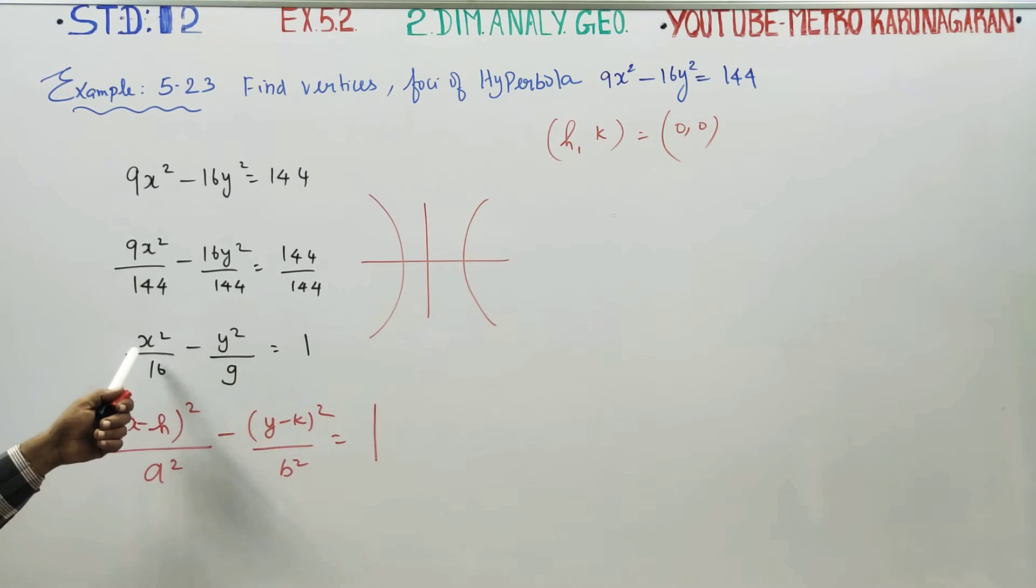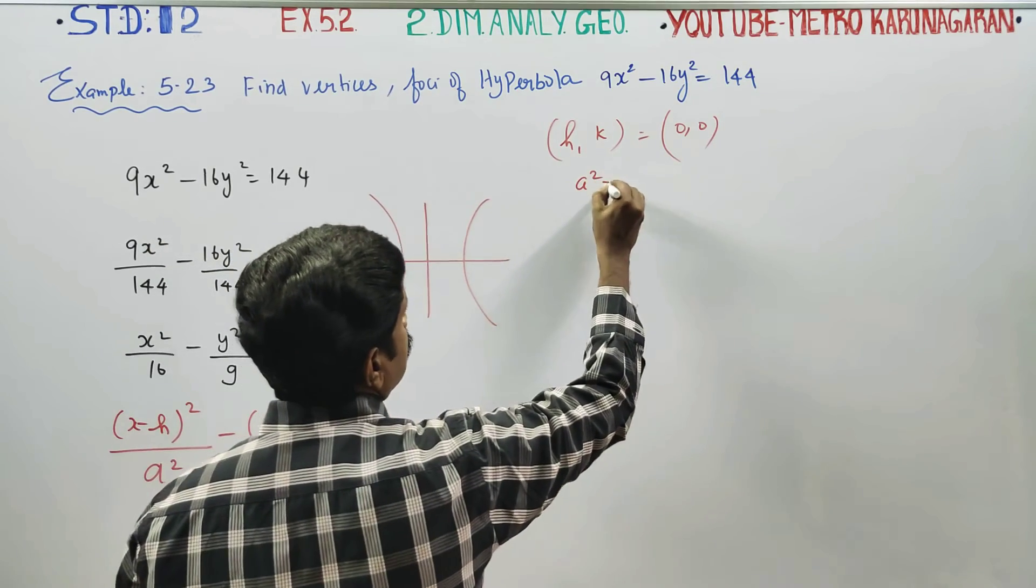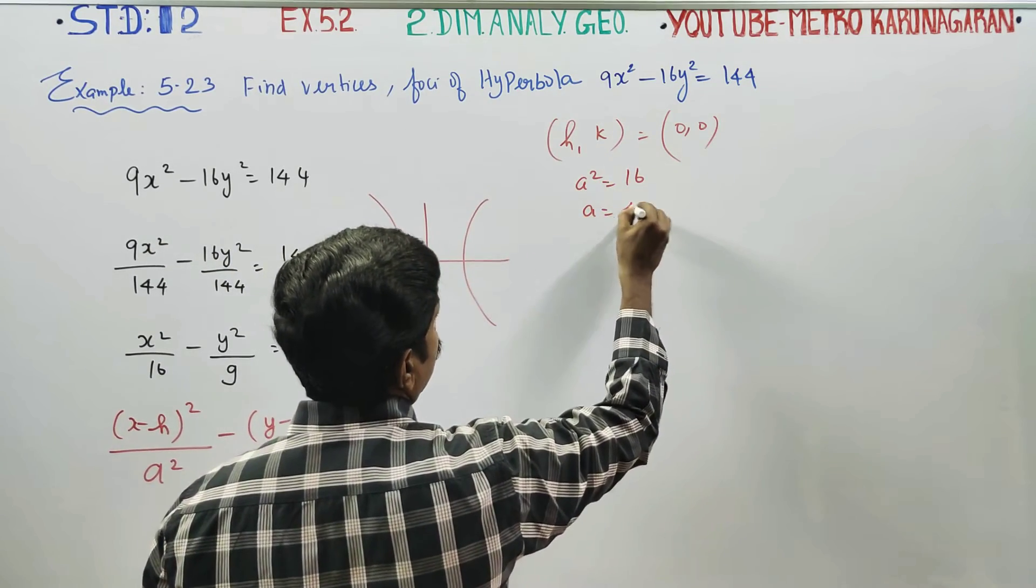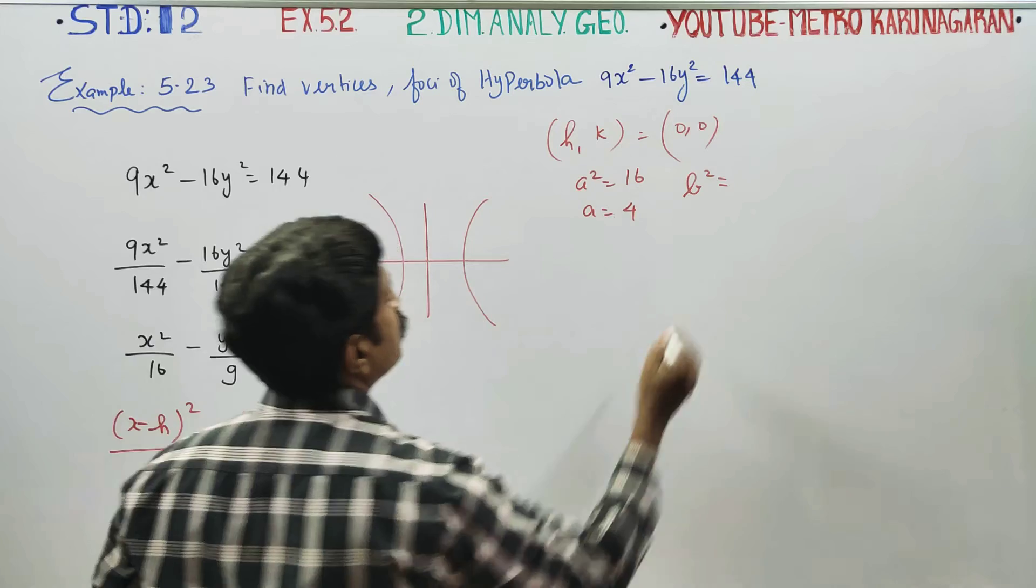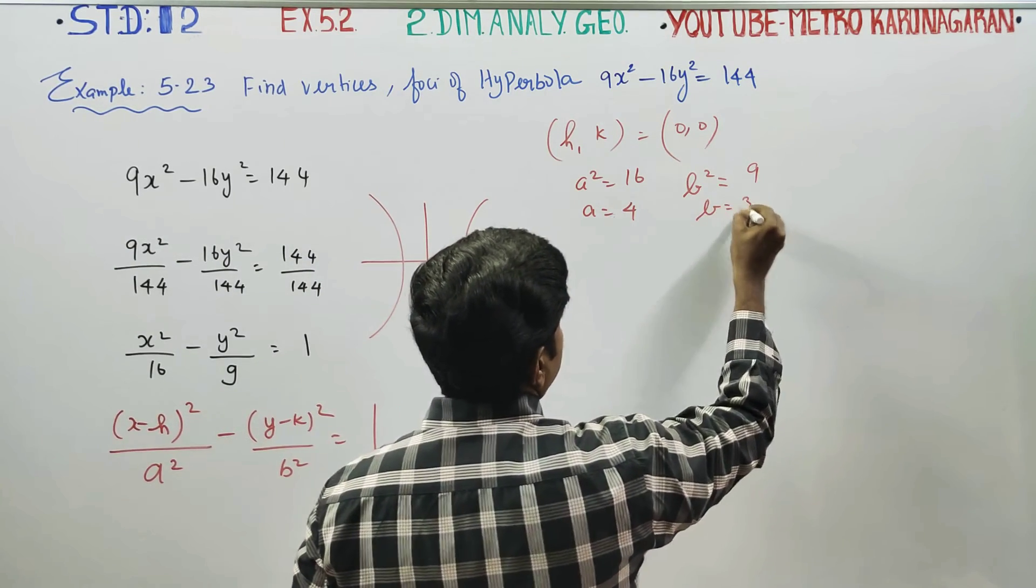Then a² equals 16, so a equals 4. And b² equals 9, so b equals 3.